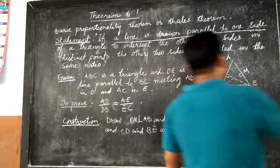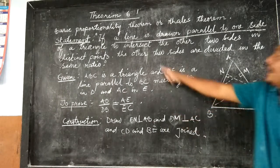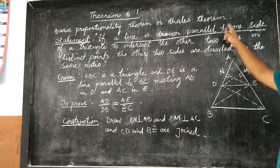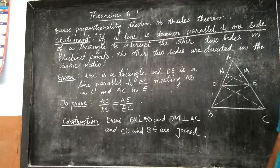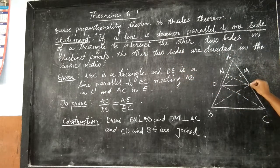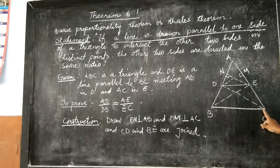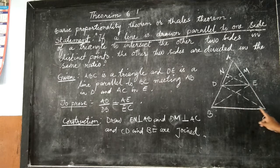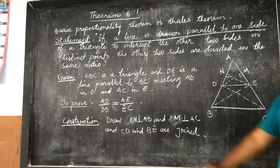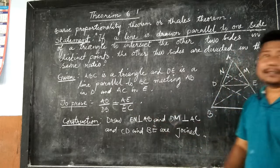According to the statement, what is given: a line is drawn parallel to one side of a triangle. That means DE is a line parallel to one side of the triangle, BC. So if DE is parallel to BC, then we are going to prove that AD by DB is equal to AE by EC.